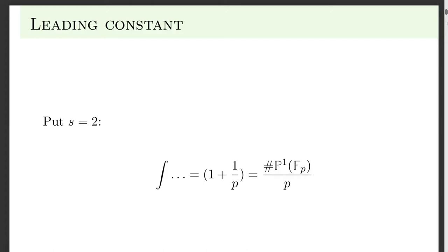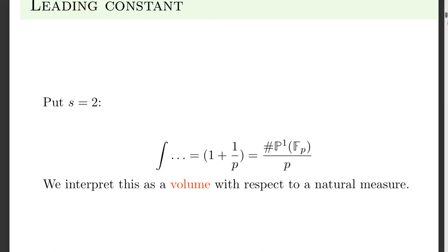It's interesting: we've integrated over the open piece of P1, affine A1, but we find information about the completed thing, P1. We'll interpret this as a volume with respect to some natural measure on this variety. And we can do it in a more general setup. We start with some algebraic variety over a number field.